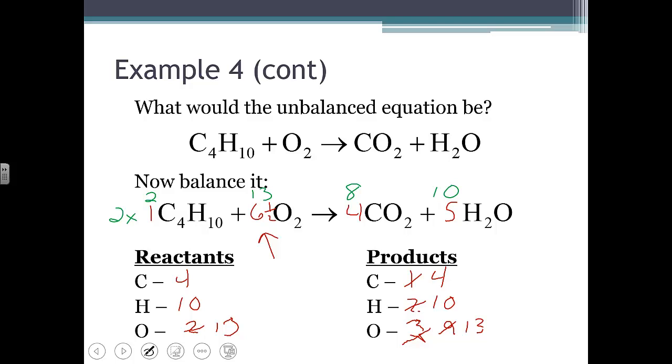If we double check our amounts, we have eight carbons and twenty hydrogens and twenty-six oxygens. And we have on the right side eight carbons and twenty hydrogens. And the oxygens, I have sixteen here and another ten, and that is twenty-six. So we do have equal amounts. We've double checked it. It does balance.